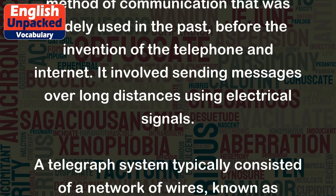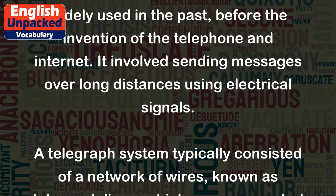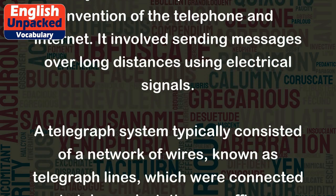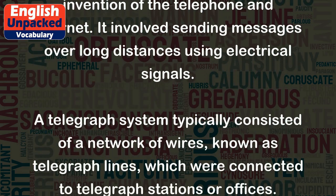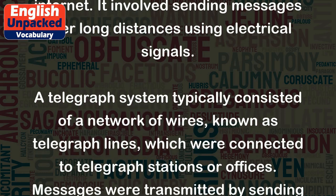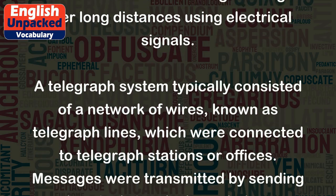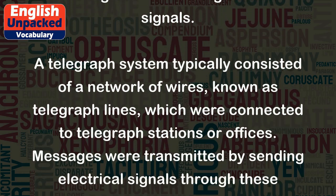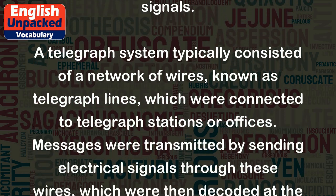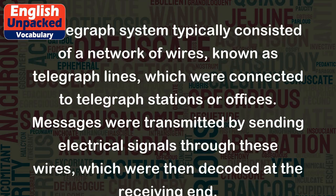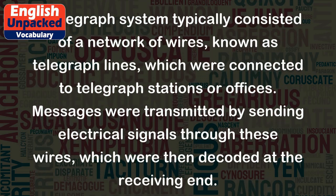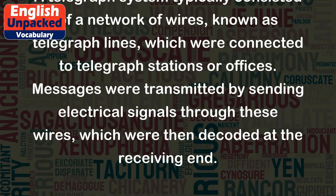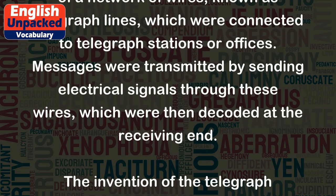A telegraph system typically consisted of a network of wires, known as telegraph lines, which were connected to telegraph stations or offices. Messages were transmitted by sending electrical signals through these wires, which were then decoded at the receiving end.